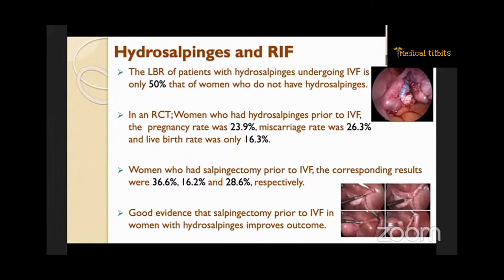Hydrosalpinges are one of the important causes of RIF. The live birth rate of patients with hydrosalpinges undergoing IVF is only 50% that of women without hydrosalpinges. In an RCT, women who had hydrosalpinges prior to IVF had a pregnancy rate of 23.9%, miscarriage rate of 26.3%, and live birth rate of only 16.3%. After salpingectomy, these results improved to 36.6%, 16.2%, and 28.6% respectively. There is good evidence that salpingectomy prior to IVF in women with hydrosalpinges improves outcome.